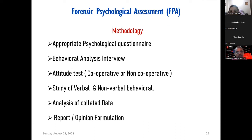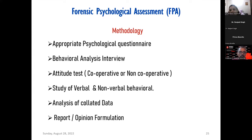The FPA procedure includes a proper psychological questionnaire, behavior analysis interviews, attitude tests, verbal and non-verbal analysis, and analysis of collated data — whatever the investigating officer, other witnesses, or CDR files have provided. All these steps are like a pre-test interview in polygraph, taking two to three hours per subject. Then we give our opinion or report that the subject is deceptive or truthful.